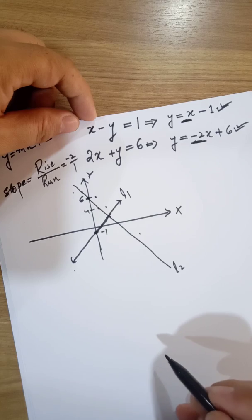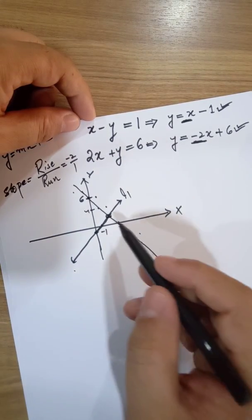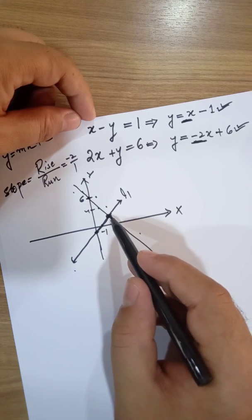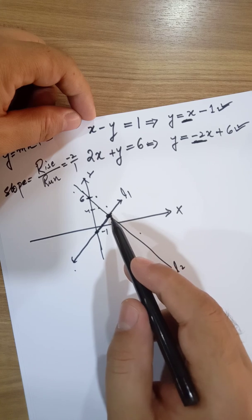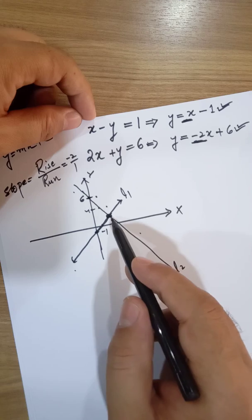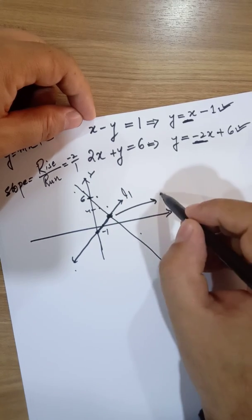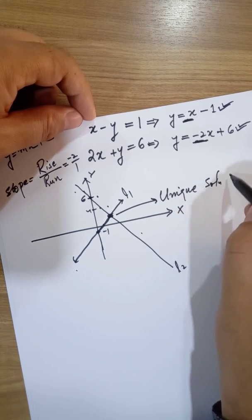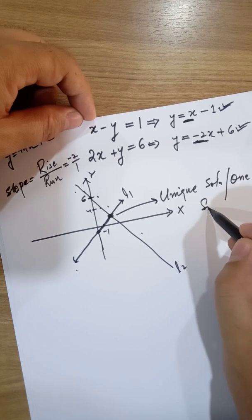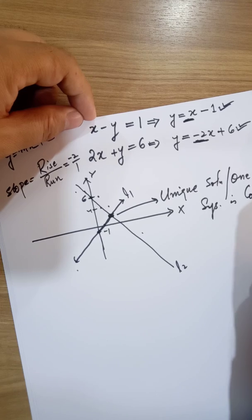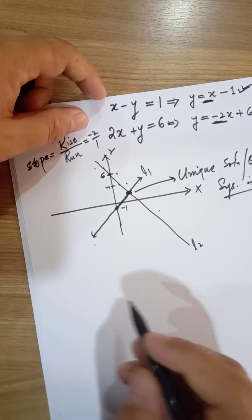We can easily see that lines L1 and L2 are intersecting at one point. Two lines intersecting at one common point means the system has a unique solution — only one solution. Since solutions are defined, the system is consistent with a unique solution.